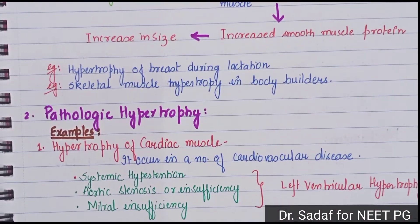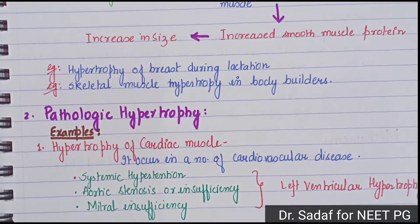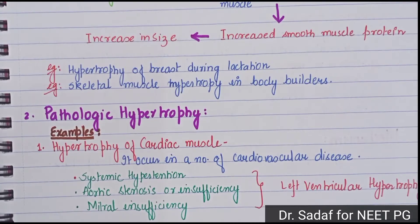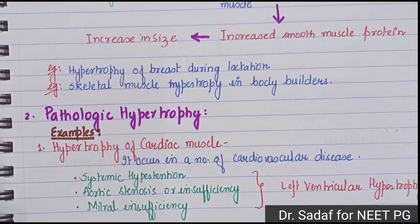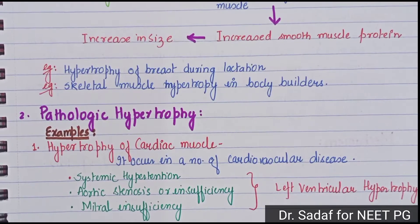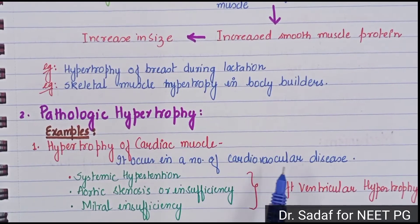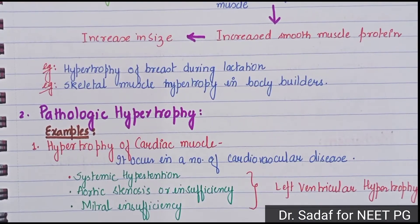Pathological hypertrophy involves a pathological change that develops in the body. There is a pathogen or condition that drives hypertrophy — it is not normal physiology. For example, hypertrophy of the cardiac muscle occurs in a number of cardiovascular diseases.